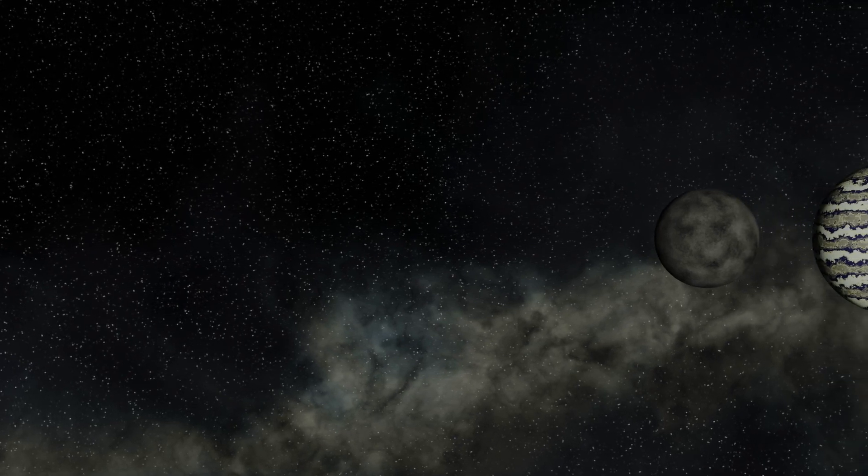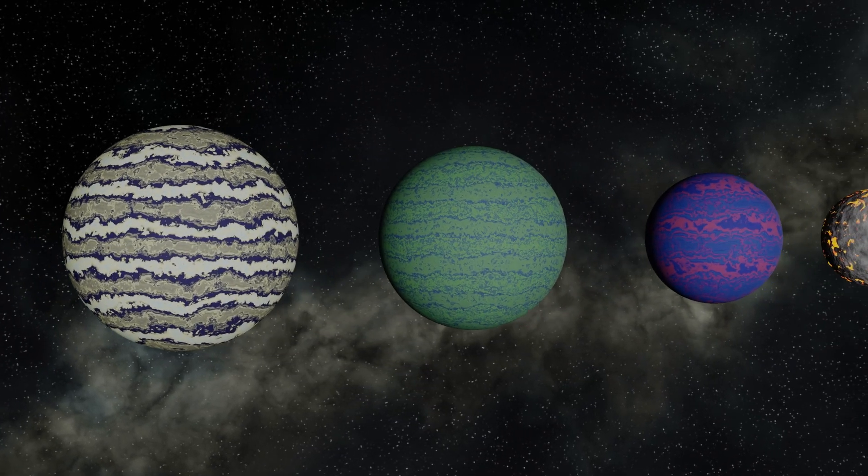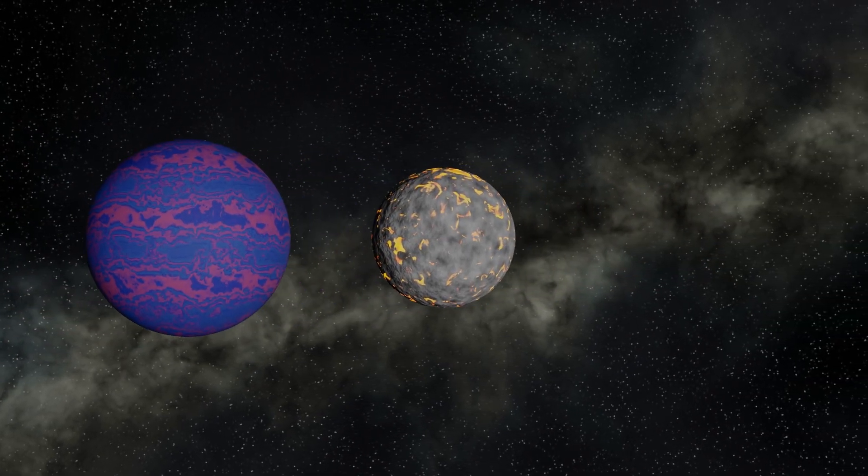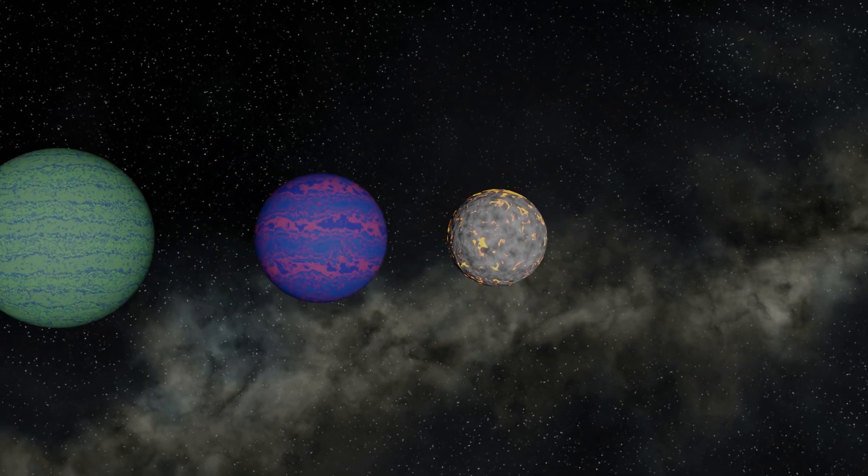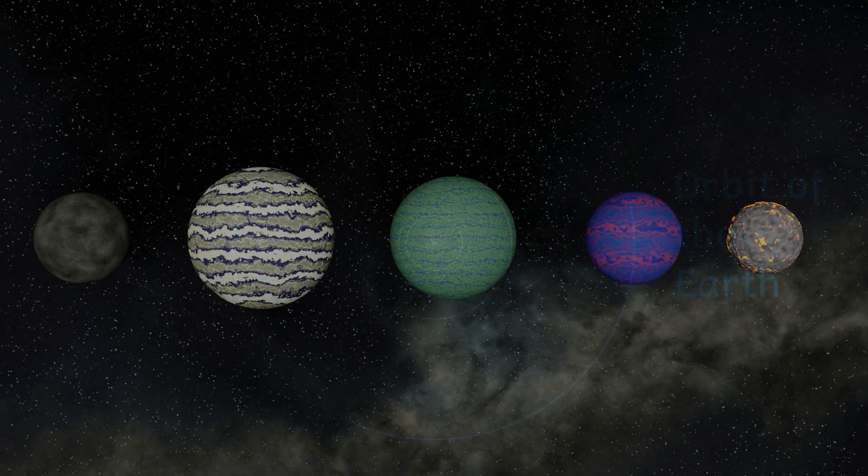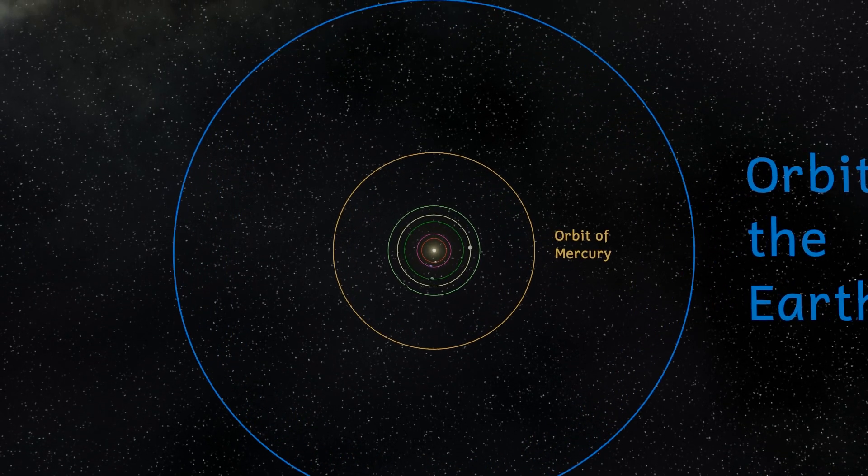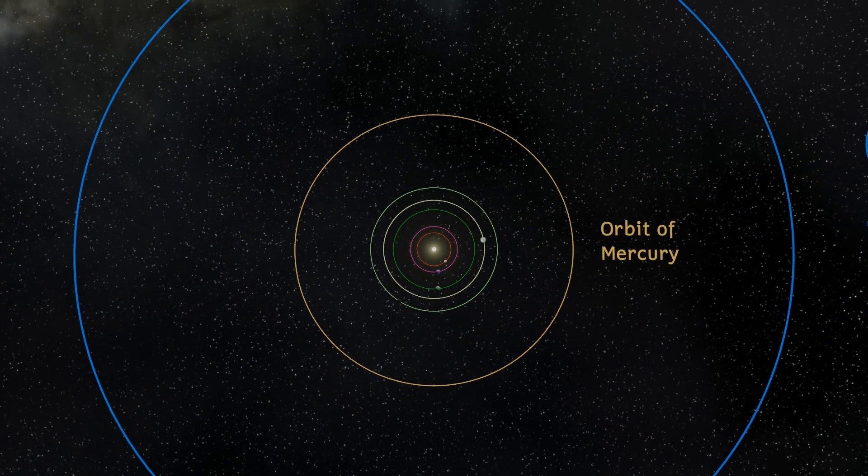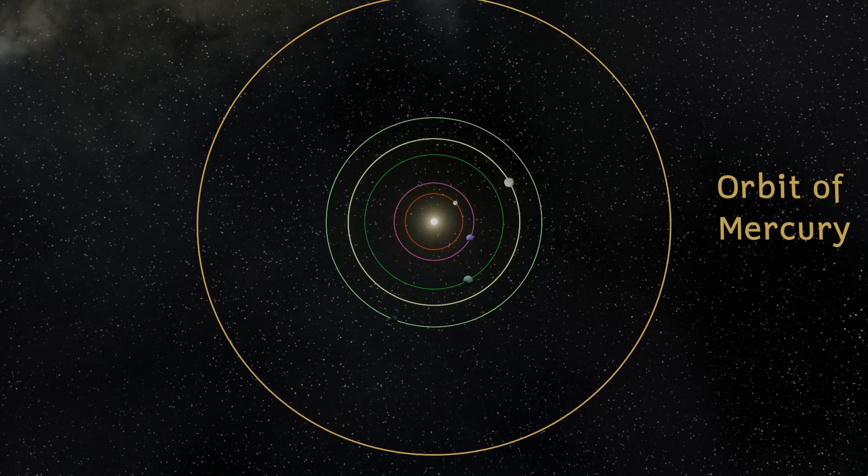This star has a planetary system consisting of five planets. Four of these planets were recently discovered by a group of researchers which included high school students, but more about that in a little bit. Firstly, let's take a look at the planets. This is another very compact star system, with the outermost planet orbiting at a distance of less than half of our own planet Mercury, which is the closest planet to our sun. And this is where we'll start.